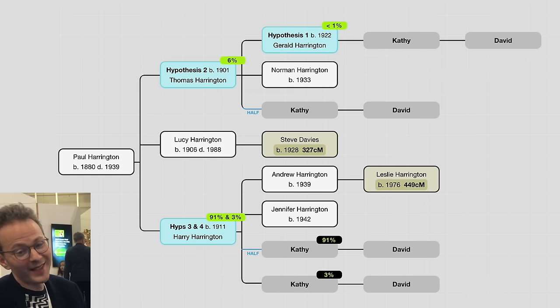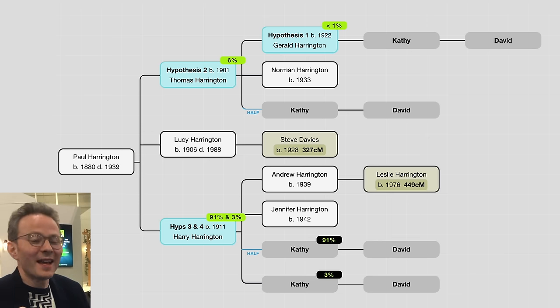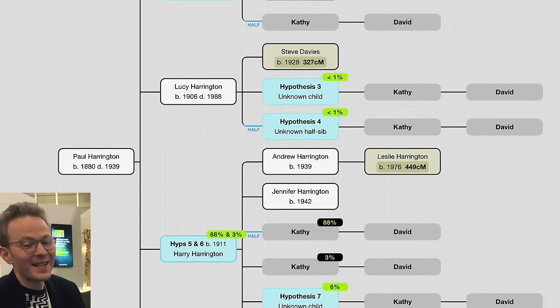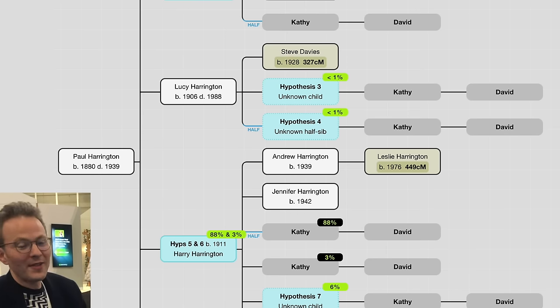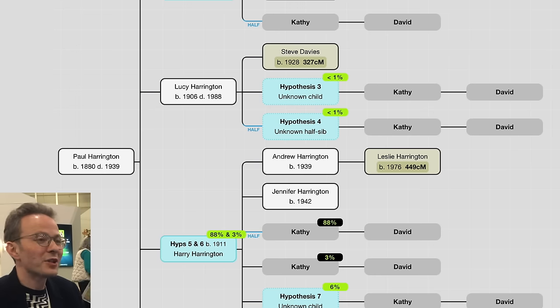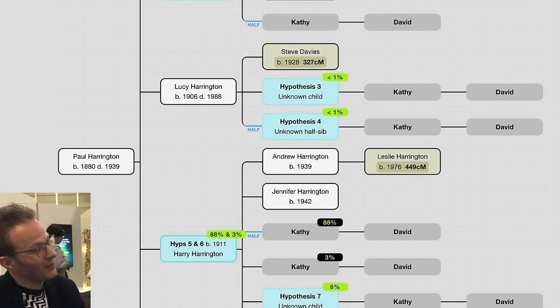It calculates the relationship between the DNA tester and the match for each potential father, then takes the amount of DNA shared and calculates the probability that that amount works for that relationship. There's a lot of heavy lifting you don't have to do because the tool does it for you. You should let the tool create new people in the tree, because otherwise there could be possibilities you're not considering — you can always delete suggestions you know didn't happen.